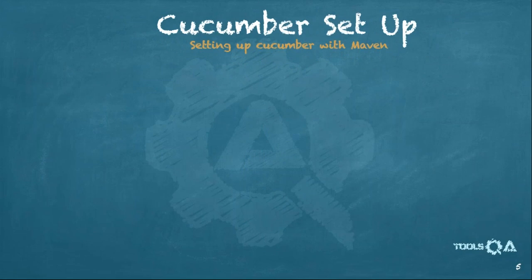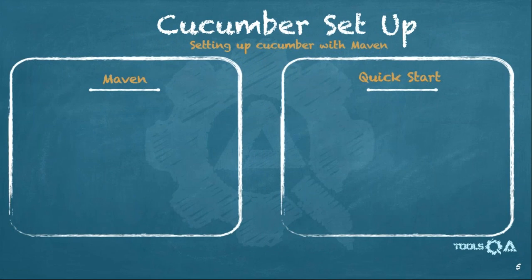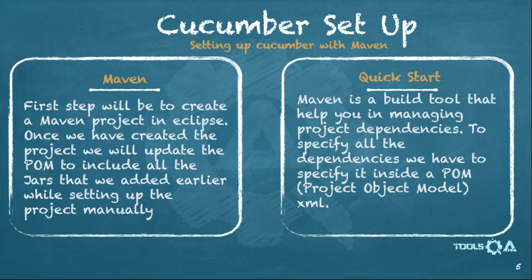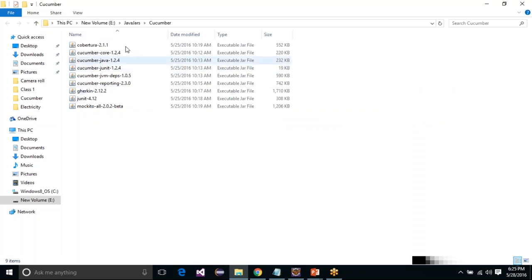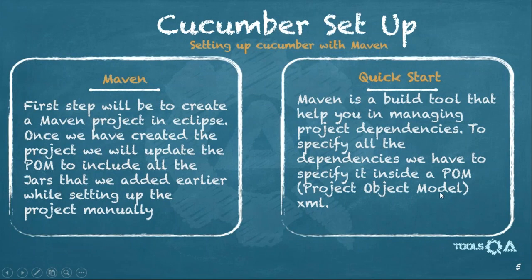Now let us see how to set up Cucumber with Maven. Maven is a build tool that helps us manage our project and manage project dependencies. This tool also relies on the MVN repository to download all the required jars. A Maven project will consist of an XML file called pom.xml — Project Object Model. In this XML you have to specify the required dependencies you want to add to the project, and the downloading and associating part will be taken care of by Maven.